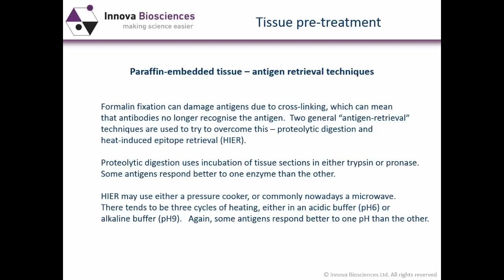A more recent technique is heat-induced epitope retrieval, where you heat the tissue slides in solution to reduce cross-linking caused by fixation. This can be done in a pressure cooker or microwave. We tend to use three cycles of heating using either an acidic buffer at around pH 6 or an alkaline buffer at pH 9. Some antigens respond better to one pH than the other, and some antibodies will work on a particular antigen after treatment at pH 6 but not pH 9, and vice versa.